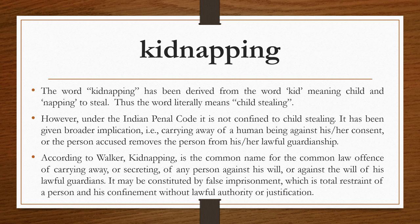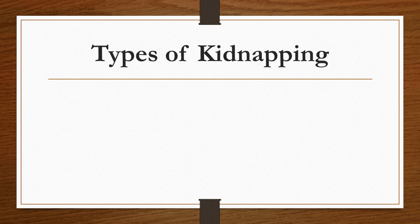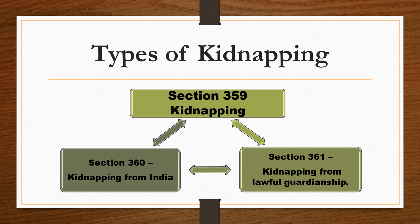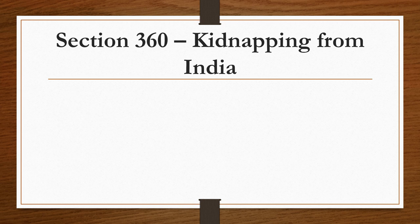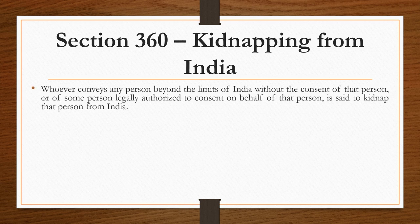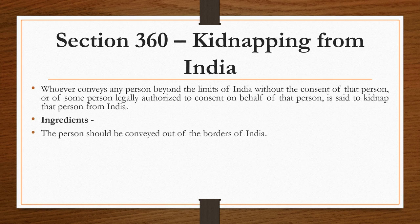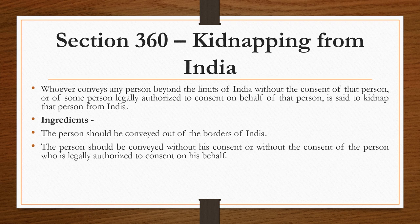Under the Indian Penal Code, there are two types of kidnapping. The first is described under Section 360 — kidnapping from India — and the second is Section 361 — kidnapping from lawful guardianship. Section 360 explains that whoever conveys any person beyond the limits of India without the consent of that person, or without the consent of some person legally authorized to consent on their behalf, is said to kidnap that person from India. The ingredients are: firstly, the person must be conveyed out of the border of India; secondly, without his consent or the consent of a person legally authorized on his behalf.